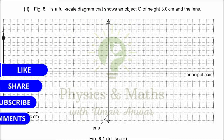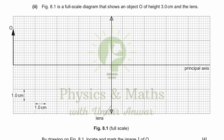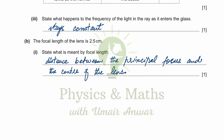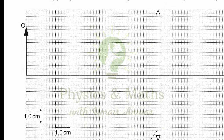Figure 8.1 is a full scale diagram showing an object O of height 3.0 centimeters and the lens. By drawing on figure 8.1, locate and mark the image I of O. The focal length was given as 2.5 centimeters, so we mark it on both sides. The object length is 3 centimeters, meaning each large box or five small boxes together represent one centimeter. So two centimeters, and here would be 2.5 centimeters for the principal focus position.